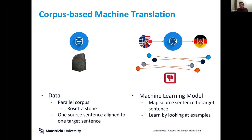In the Rosetta Stone you have the same text written in three different languages. Similarly, for machine translation we typically have one sentence in the source language with an alignment to the target language, telling us: this source sentence translates into this target sentence.